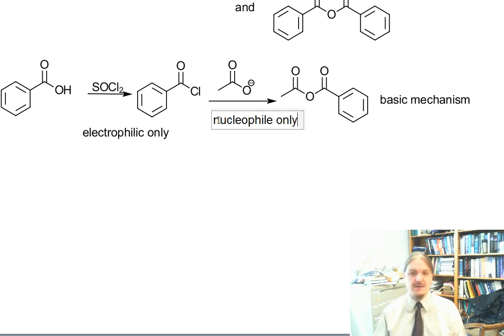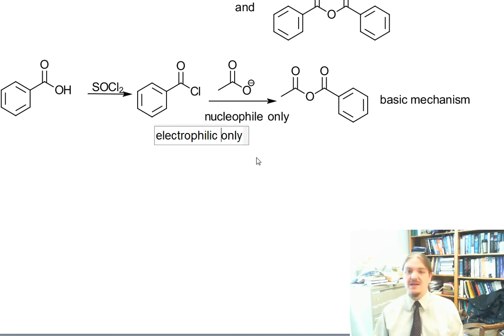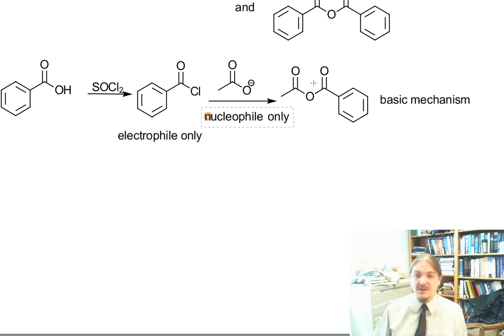Down the line, this kind of approach is a really powerful approach when you have compounds that can be both nucleophiles and electrophiles in the same reaction. Change one of them into something that's only a nucleophile. Change the other one into something that's only an electrophile. And then you can control the outcome of the reaction to get specifically the thing that you want.